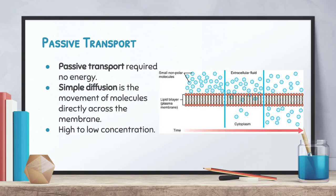Looking at the diagram, the small nonpolar molecules start on one side of the membrane. As they diffuse through the membrane, they even themselves out until the concentration is equal on both the inside and outside of the cell membrane. That is the concept of passive transport — it requires no energy at all. Simple diffusion moves molecules across the membrane from a high concentration to a low concentration until both sides have the same concentration.